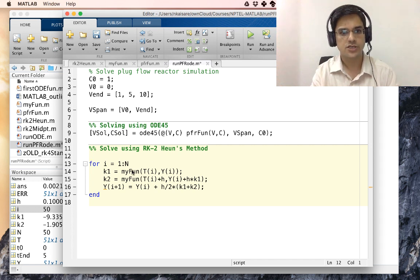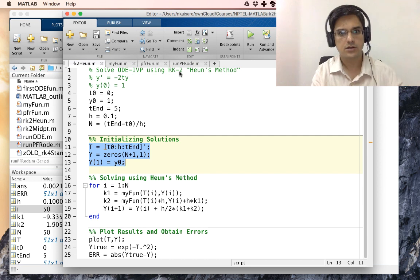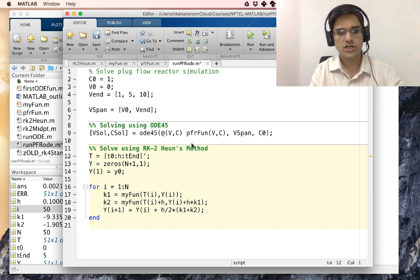Prior to solving using Heun's method we need to initialize. We just need to copy this part and paste it over here. So our capital T is our independent variables. Y is our dependent variable. Y in this case has to be replaced with concentration C which are the dependent variables. So those are the only changes that we need to make.